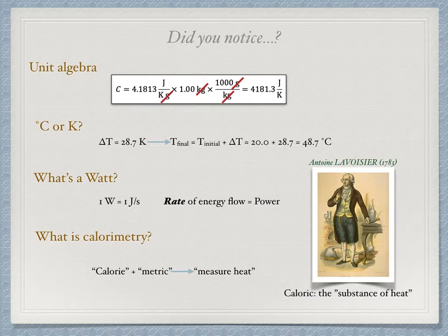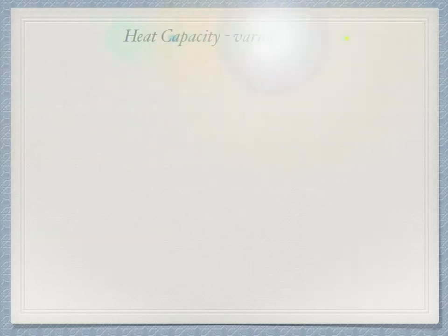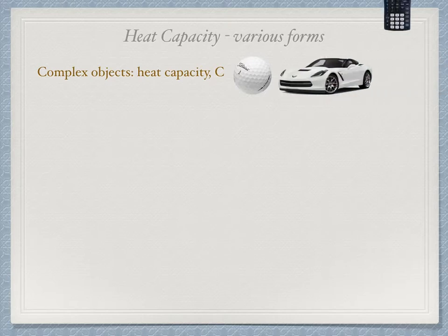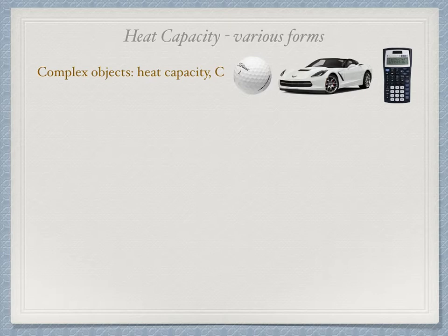Now I'd like to point out one more thing. You will come across heat capacity in many different forms. Every object has some heat capacity. If it is a complex object, made up of different materials and separate pieces, like a car for instance, there will be some amount of heat that it absorbs in order to increase its temperature. Such a thing will just have units of joules per kelvin.